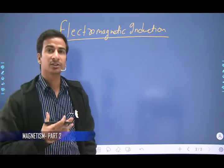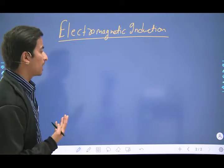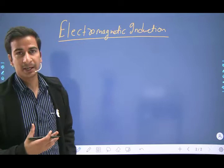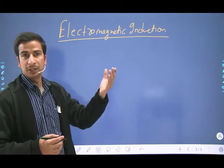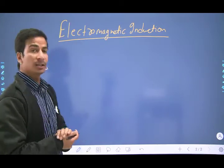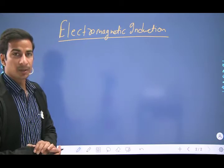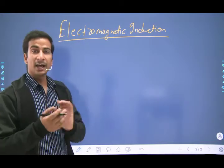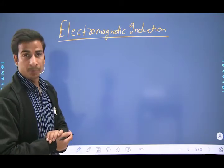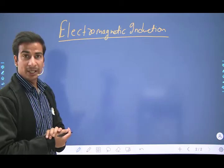Electromagnetic induction is a phenomenon which is completely inverse to the phenomenon of producing a magnetic field. People wonder: if we can produce a magnetic field by moving charge, is it possible that through the magnetic field we can produce moving charges and currents? This idea was further developed by Michael Faraday, who gave the principles of electromagnetic induction.